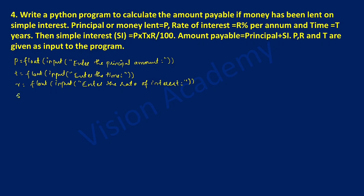Now it is time to calculate simple interest. I will take the variable called SI. We have already given the formula: P into T into R divided by 100. In Python we use the asterisk symbol, so P asterisk T asterisk R divided by — written as forward slash — 100. Now we will calculate amount payable. I will take one variable called amount, which is equal to principal P plus SI. Principal amount plus SI together gives me the amount payable.